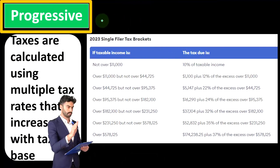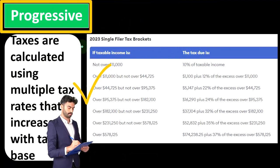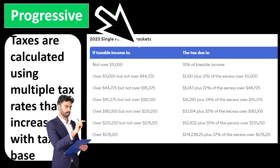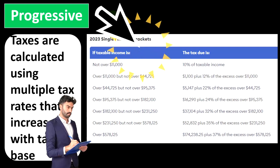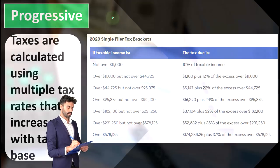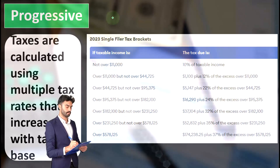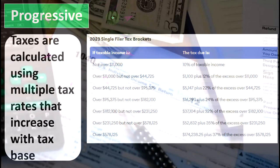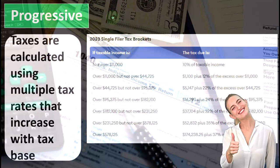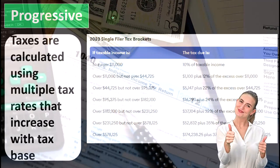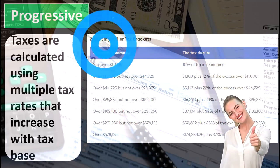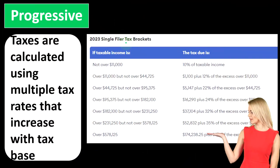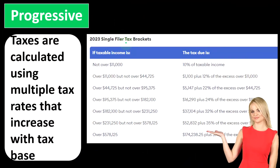The next tax category is a progressive tax, where taxes are calculated using multiple tax rates that increase with the tax base. Our federal income tax system is indeed a progressive tax. However, we want to be careful of thinking about progressive tax and flat tax as polar opposites, because oftentimes when we're making changes to the tax law, we can argue that those changes are flattening the tax or making the tax more or less progressive. Let's get into that in a little more detail by getting a general conceptual idea of the progressive tax.